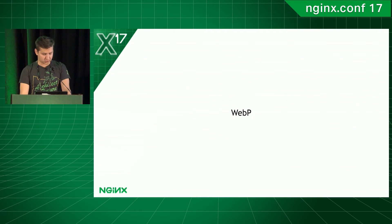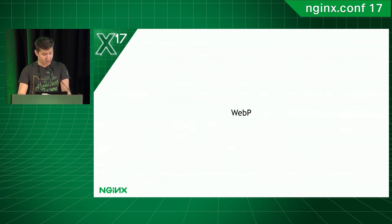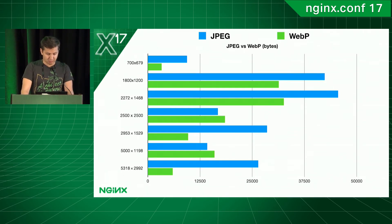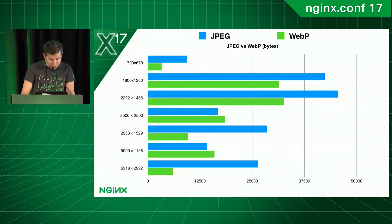I took a series of images of different resolutions from Wikipedia and converted them into WebP. Next, I resized these images using the image filter configuration. For simplicity, I used a final image size of 500 by 300 pixels. As you can see, the size of WebP images with the same quality is much smaller. With my images, the average WebP file size was less than JPEG by 30%. I recommend using it to get amazing results.